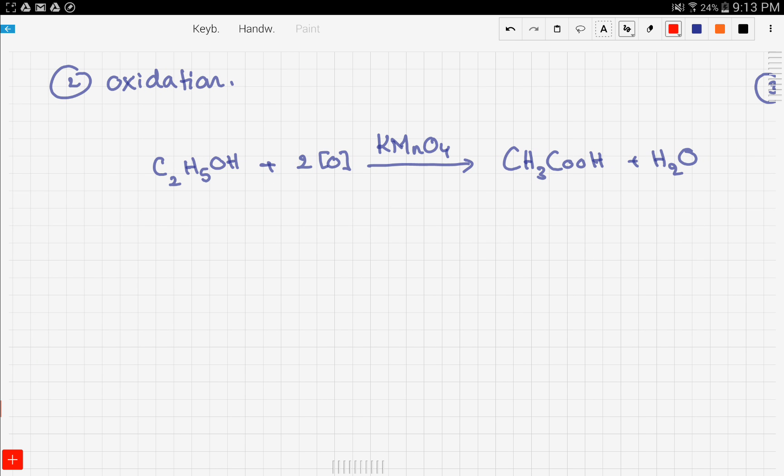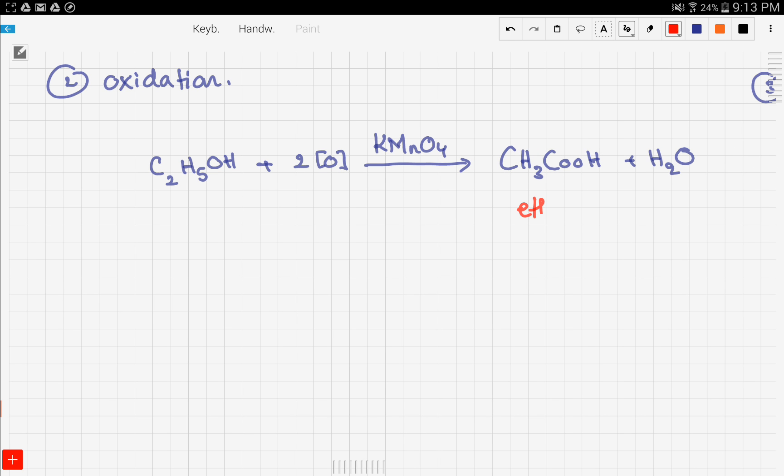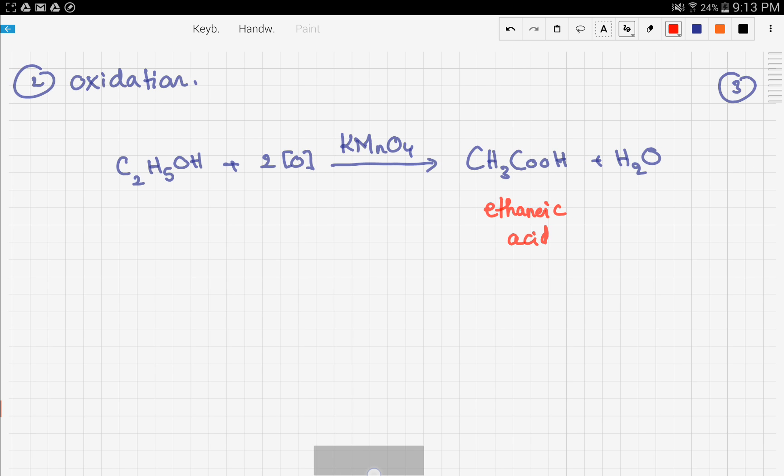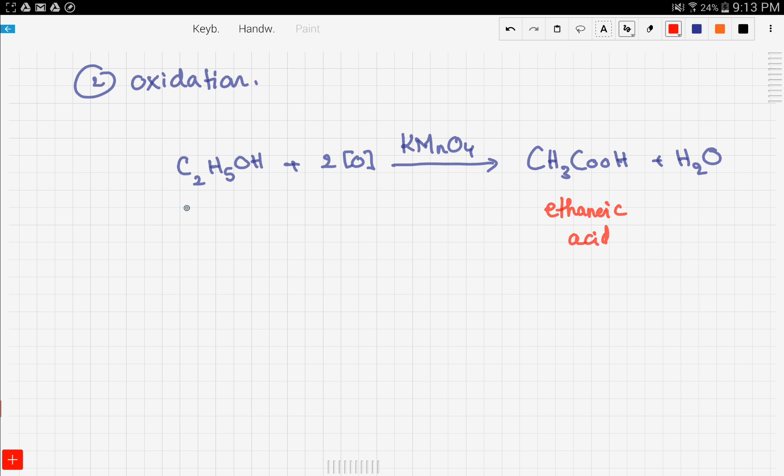Let's move on to another reaction, which is an oxidation reaction. In this reaction we use ethanol to make a carboxylic acid, and this acid is ethanoic acid. We use ethanol with acidified potassium manganate to make the ethanoic acid.